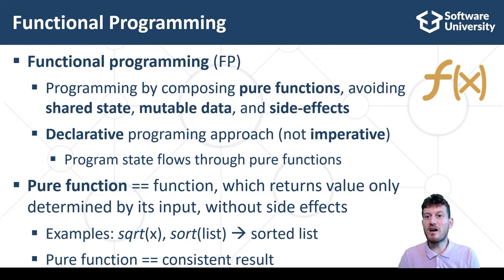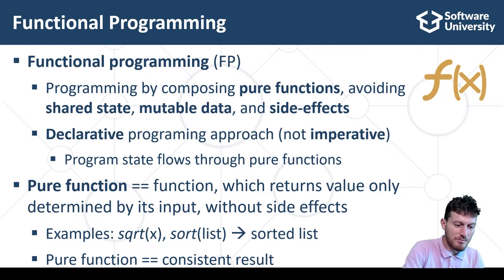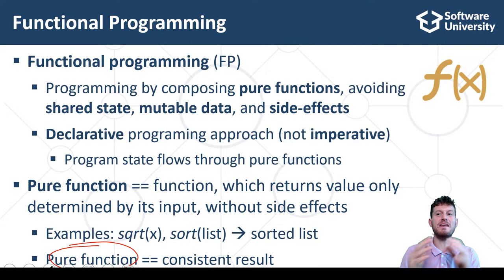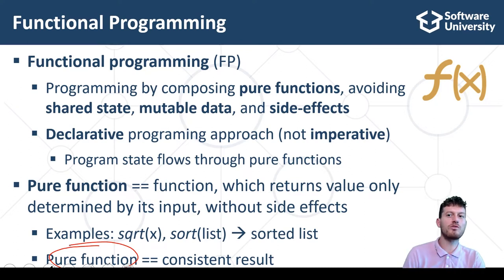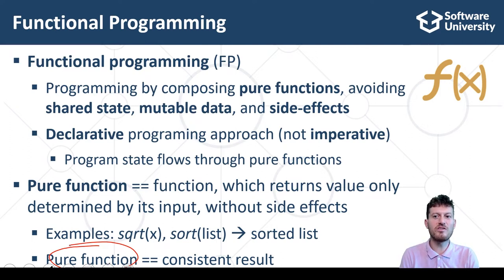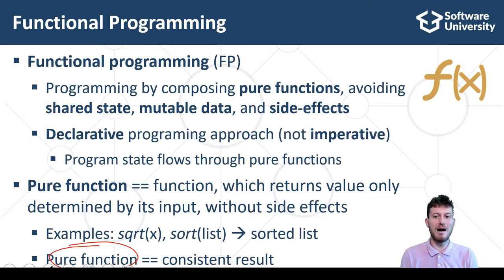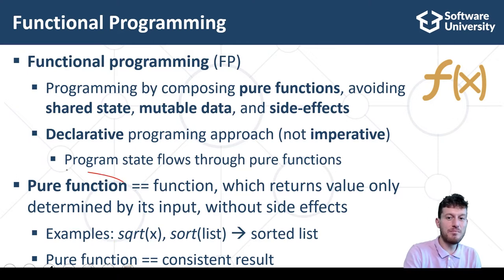Pure functions are the heart of functional programming. Using pure functions means maintaining consistent results. If you invoke a pure function many times with the same input data, it will have the same consistent behavior and return the same result, because it has no state and no interaction with external data or components. Pure functions produce predictable results, and sometimes their correctness can be mathematically proven. This is the most important principle in functional programming: to build programs by composition of stateless pure functions without side effects.